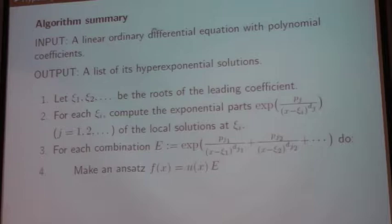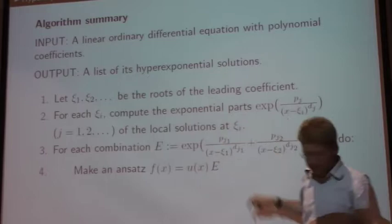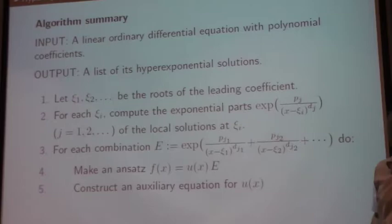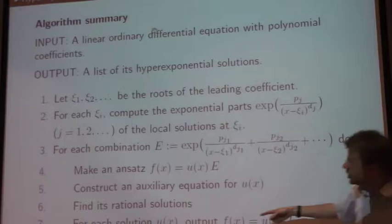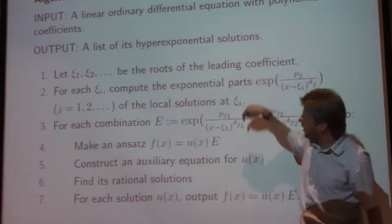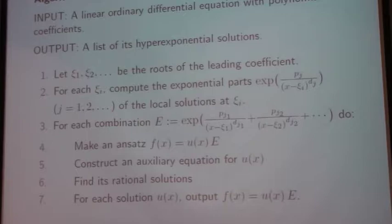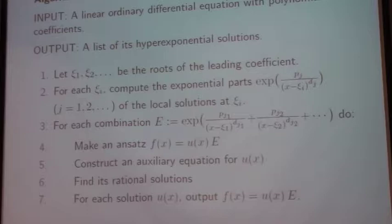And that goes through all the possible exponential parts that can occur in the solution. And for each of them, you do what I explained before. You make an ansatz for an unknown rational function with this exponential part. Construct an auxiliary equation for this rational function. Solve it by the algorithm I explained in the second part. And then, for each such rational function solution, you output u times e, this e here, as a hyperexponential solution. And when this comes to an end, you can be sure that you have enumerated all the hyperexponential solutions of the given differential equation. And if that doesn't find any, it proves that there's none.